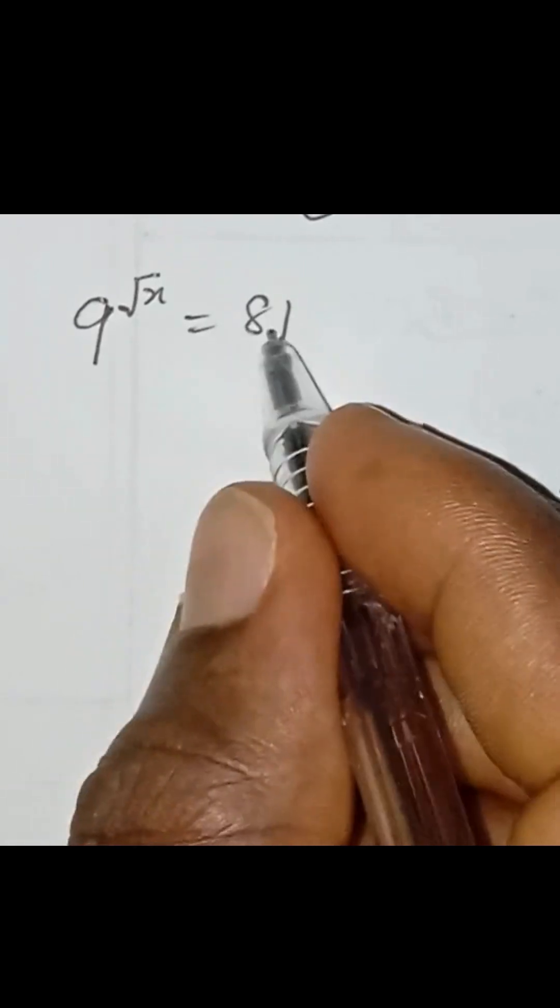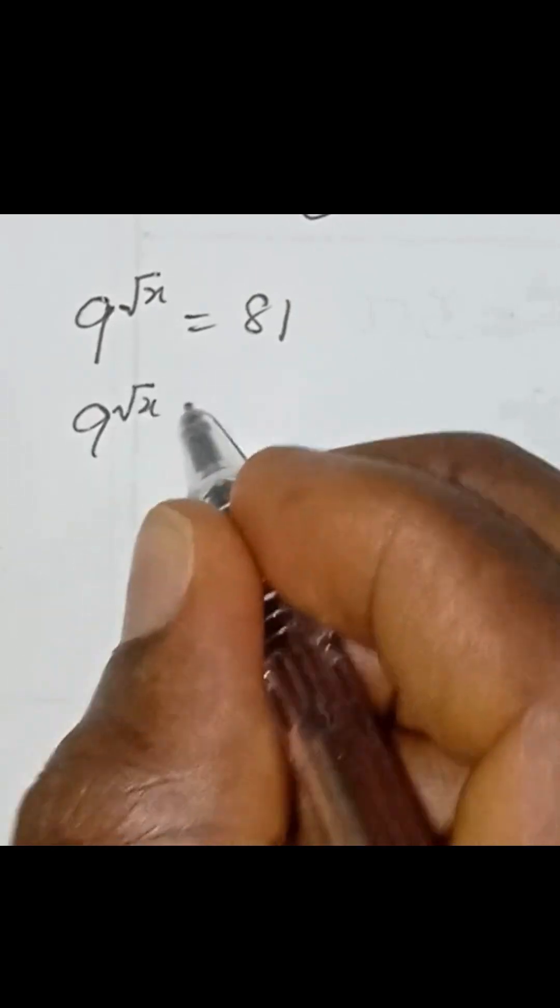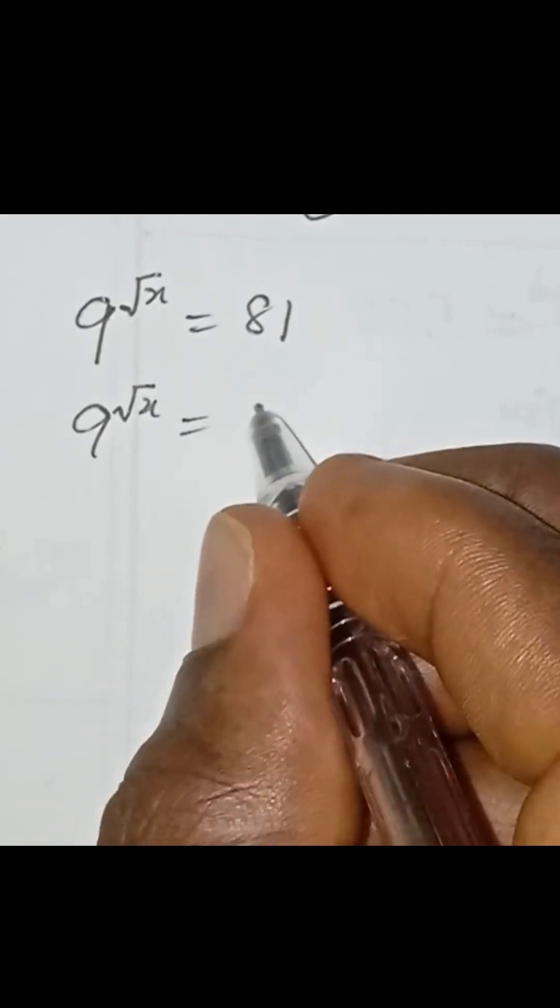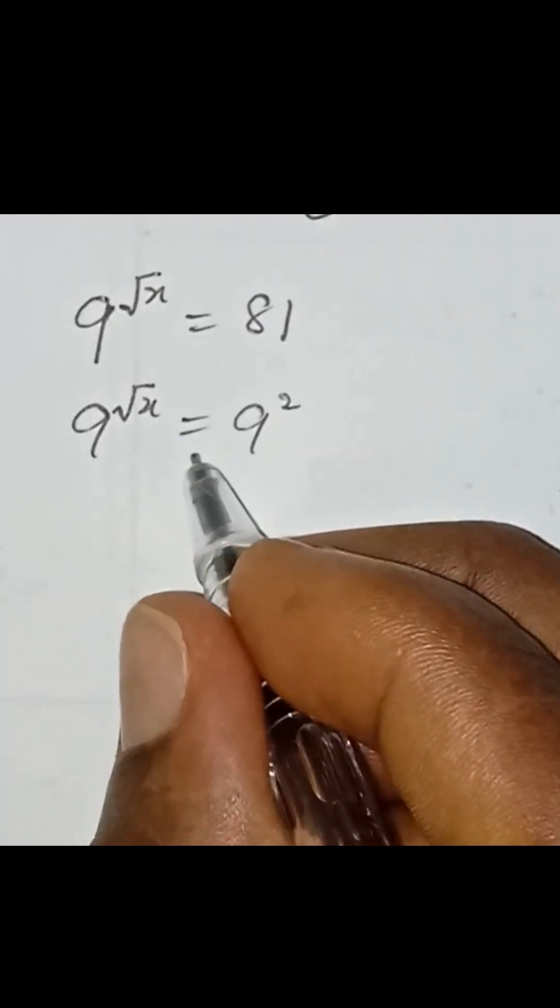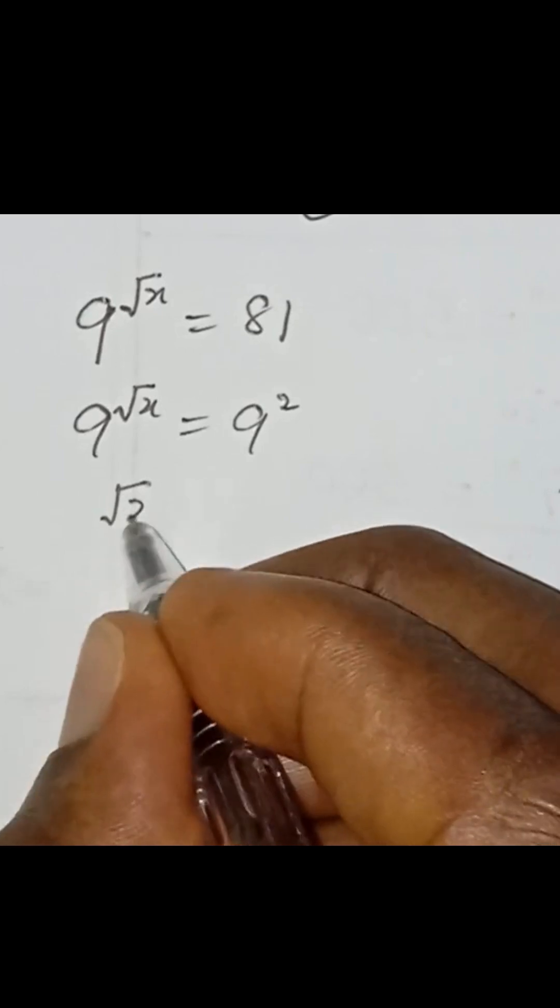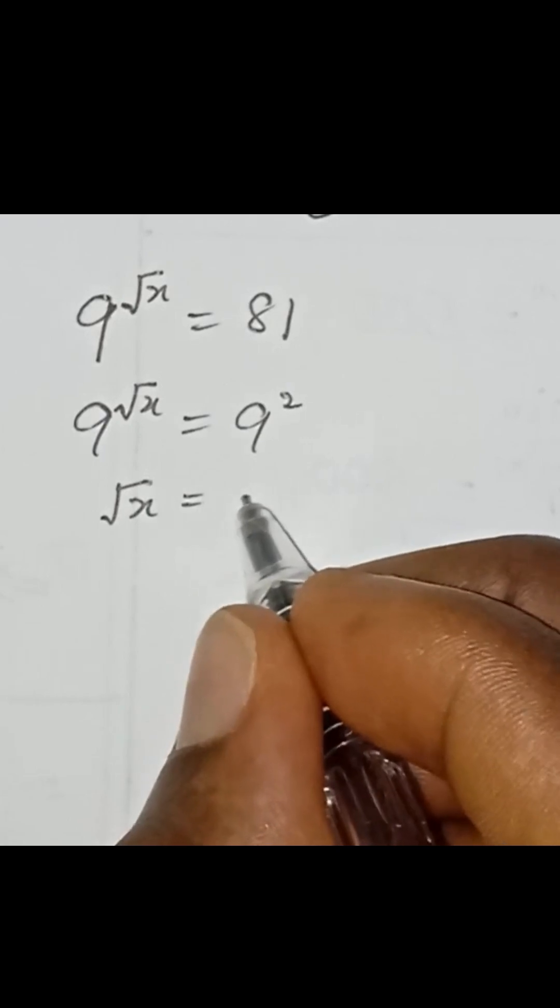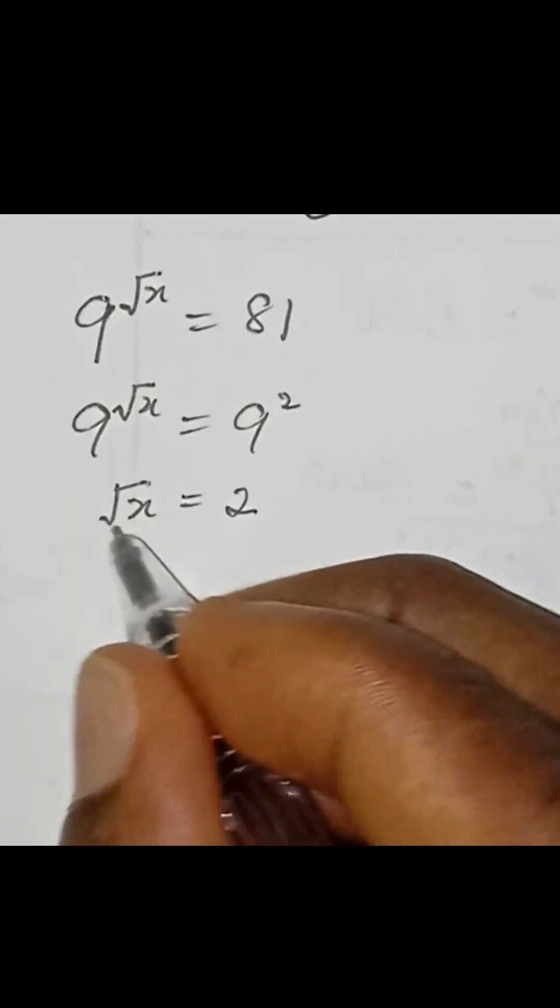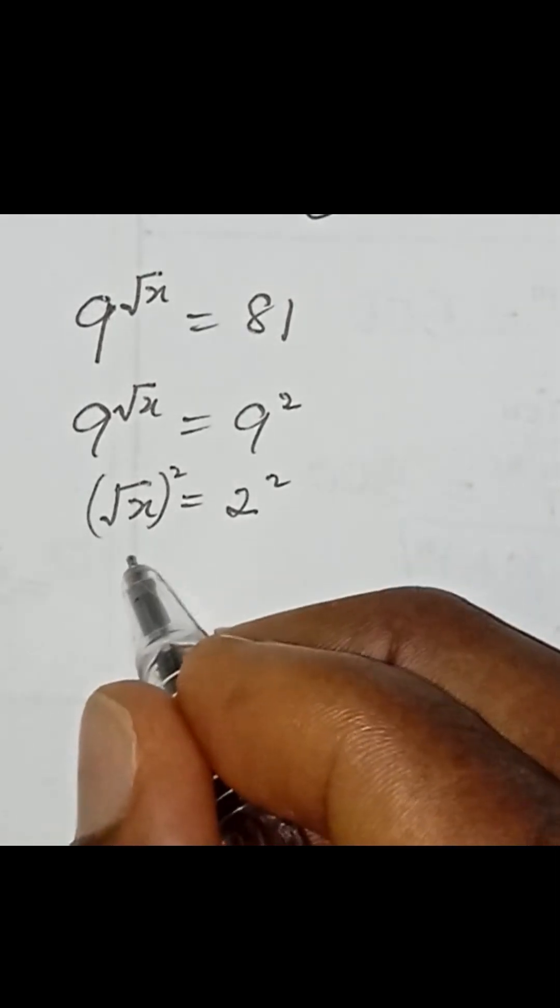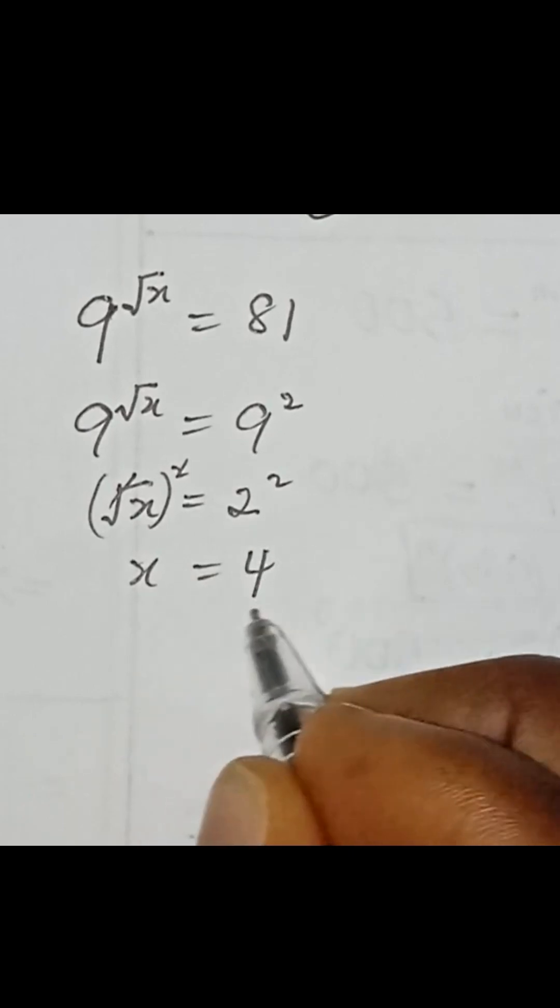So we reduce this to 9 to the power of square root x equal to 9 to the power of 2. Then we equate the exponent. So we have square root of x equal to 2. So we square both sides. This cancels out this. We have x equal to 4.